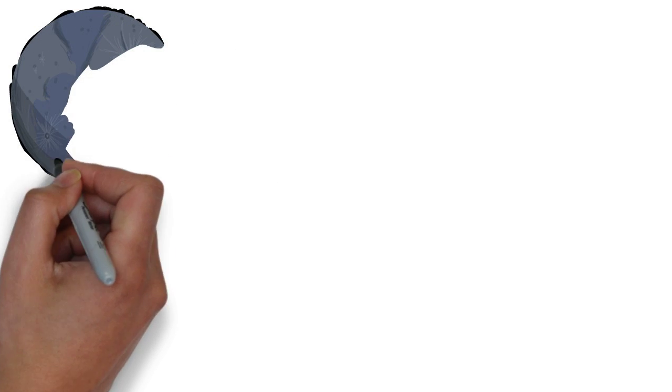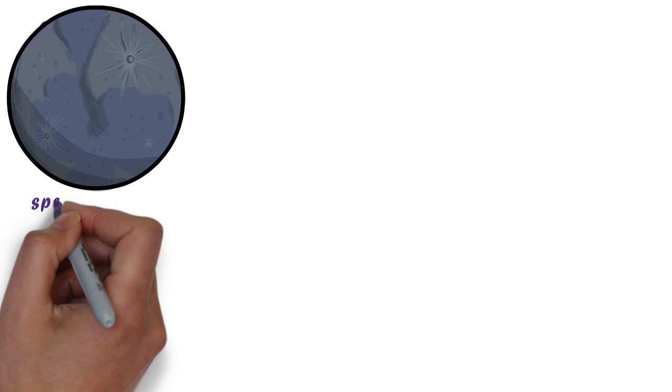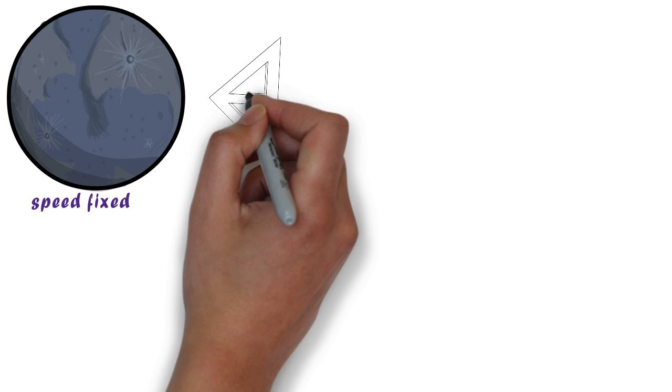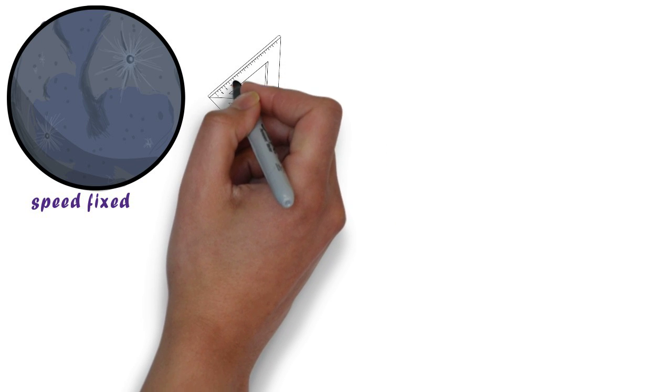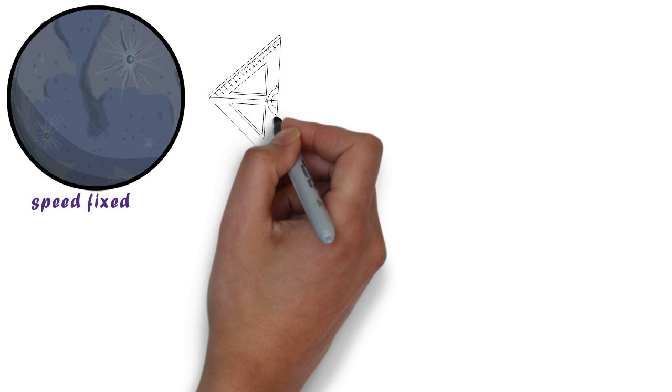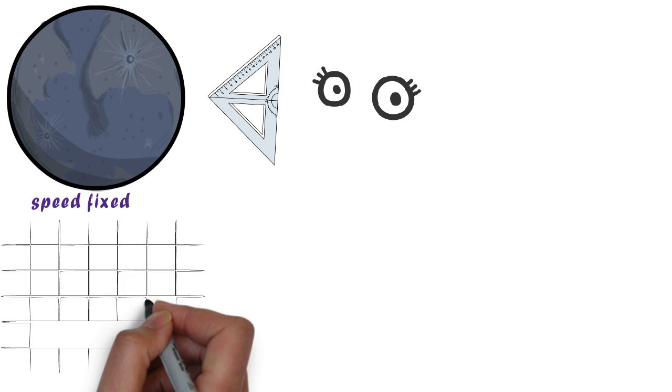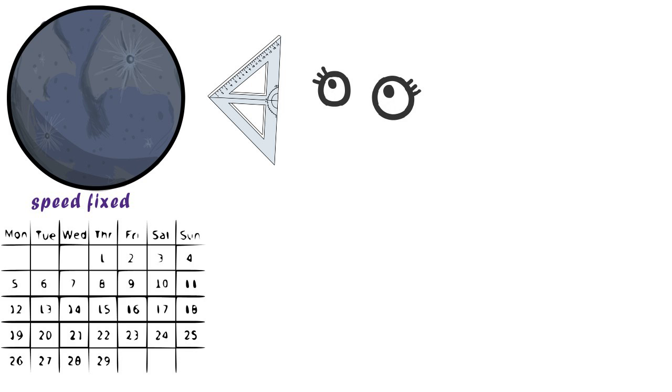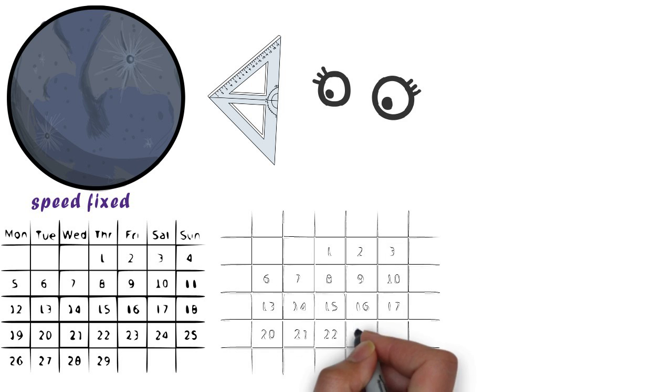Although the speeds remain the same and fixed, the sighting of the moon is not related to the speeds alone. It is also related to the angle of vision, and as such, some months are bound to be of 29 days and some months are bound to be of 30 days.